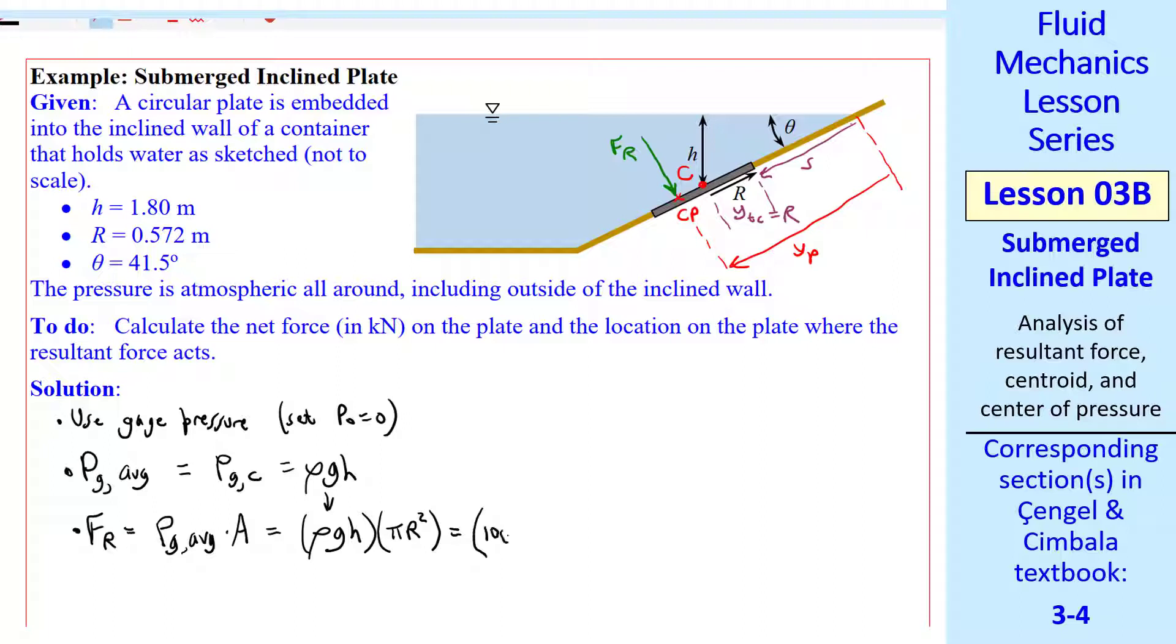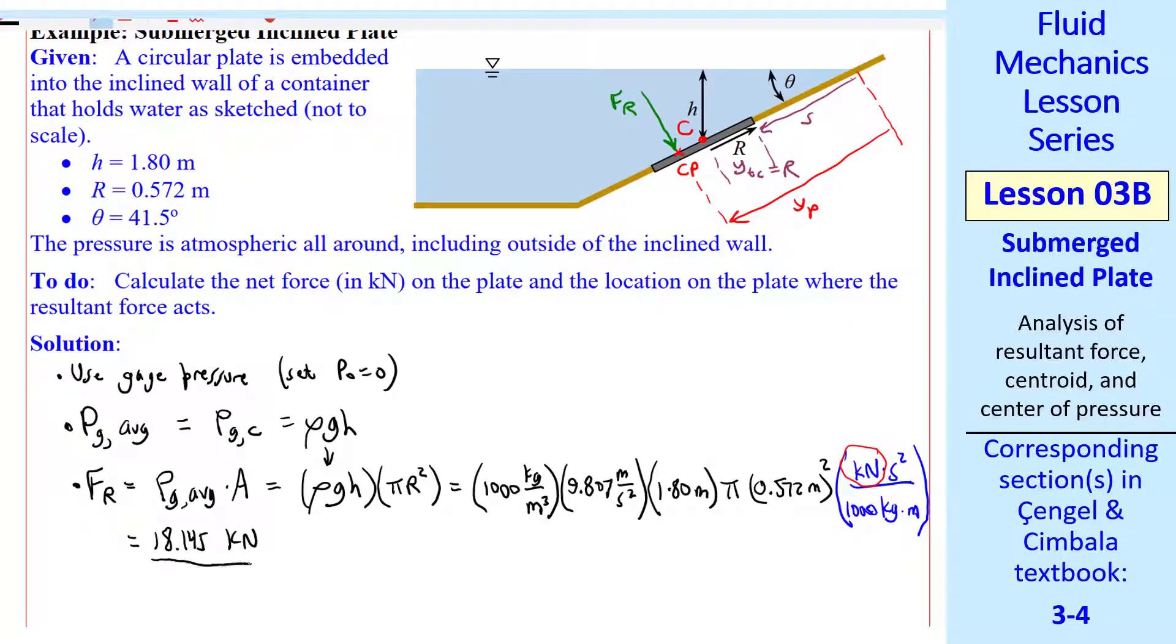I can plug in my values. Density, gravity, H, and pi R squared. We need only one unit conversion factor. A kilonewton is 1,000 kilogram meters per second squared. All the units will cancel except kilonewtons. I get 18.145 kilonewtons. So to three digits, my first answer is 18.1 kilonewtons.